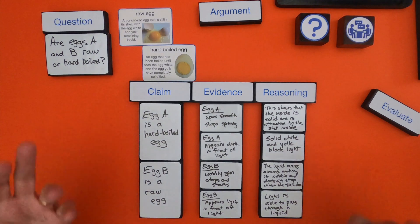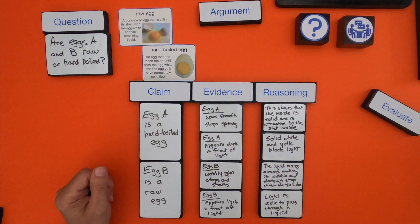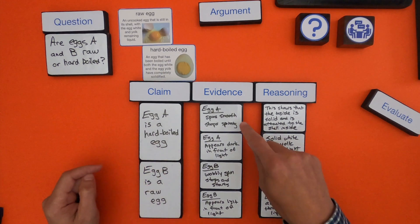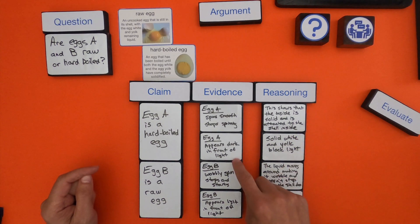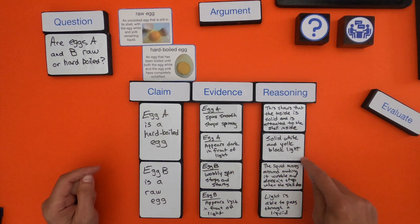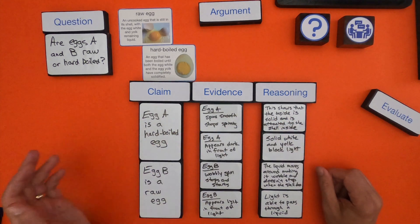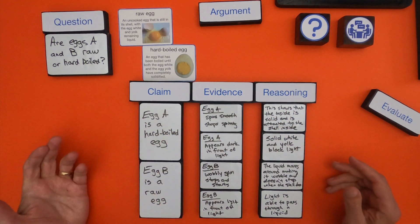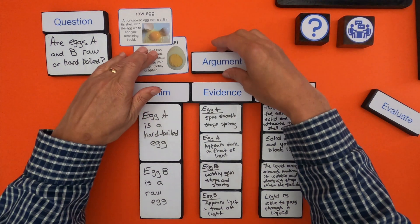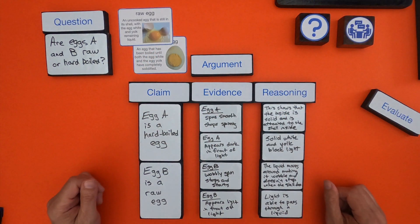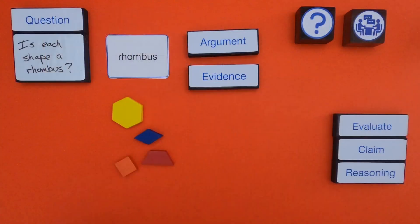When you actually give an argument, you read it from left to right. You would say: egg A is hard-boiled; it spins smoothly, which tells me the inside is solid; it also appears dark in front of a light, which tells me it's solid inside. A written argument is always claim, evidence, reasoning — but that's not the order in which you gather it. Now that you've seen how I develop an argument with all the elements, I'm going to clean this up and give you another question to answer on your own.